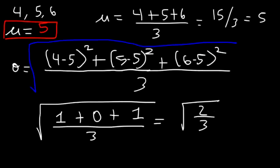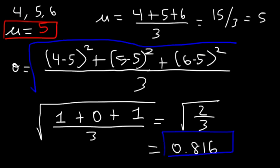2 divided by 3 as a decimal is about 0.67, and the square root of 0.67 is 0.816. As you can see, the standard deviation is less because these numbers are closer to each other — they're not far apart from the mean. In the other example, 3, 5, and 7 are further apart from the mean of 5: 3 is 2 units away, while 4 is only 1 unit away, which is why the standard deviation is so much less.